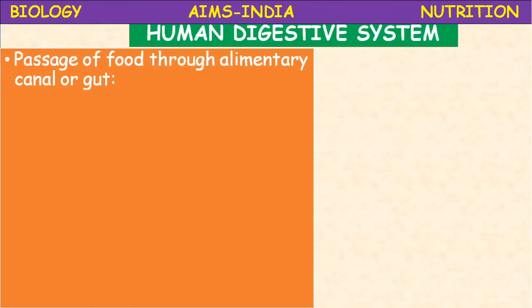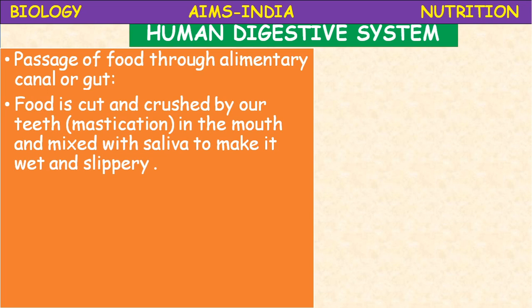Today's class covers the human digestive system and how food starts digestion — the passage of food through the alimentary canal or gut. The total nutrition in complex organisms can be studied under different steps: ingestion, digestion, absorption, assimilation, and egestion. We are currently focusing on the second step: digestion.